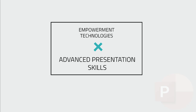First, let us talk about presentation software. A presentation software is a computer software package used to show information, normally in the form of a slideshow. It mostly includes three major functions: an editor that allows text to be inserted and formatted, a method for inserting and manipulating graphic images, and a slideshow system to display the content.